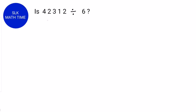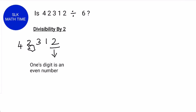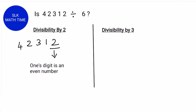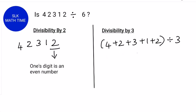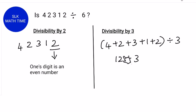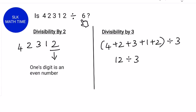Let's see another example. Is 42312 divisible by 6? First, let's see if it is divisible by 2. The ones place here is 2, and 2 is divisible by 2, so 42312 is divisible by 2. Now let's see if it's divisible by 3. So let's add the digits: 4 plus 2 plus 3 plus 1 plus 2. When we add this all together, we get 12, and 12 is divisible by 3. So 42312 is divisible by 6.